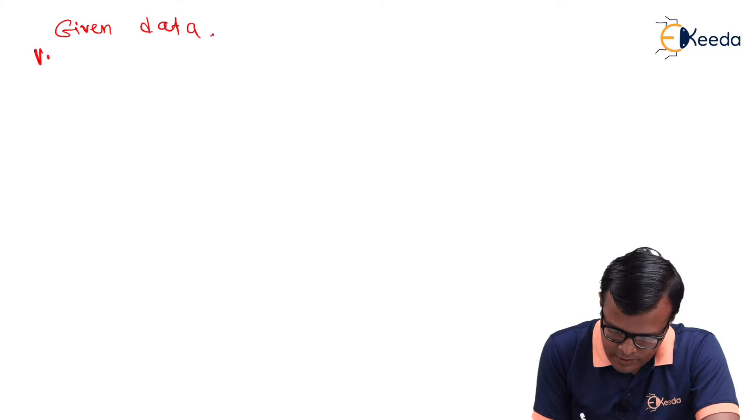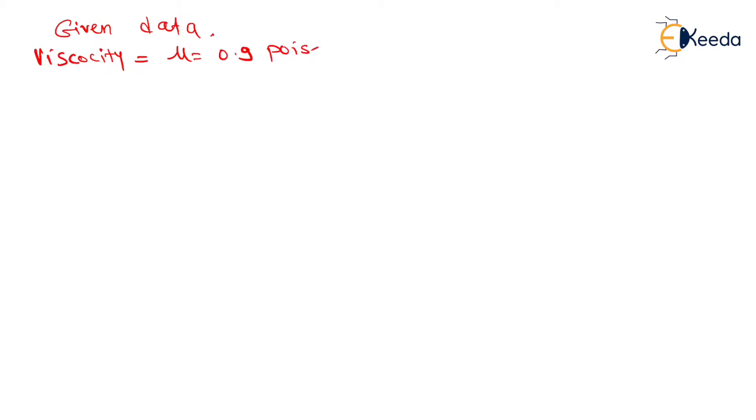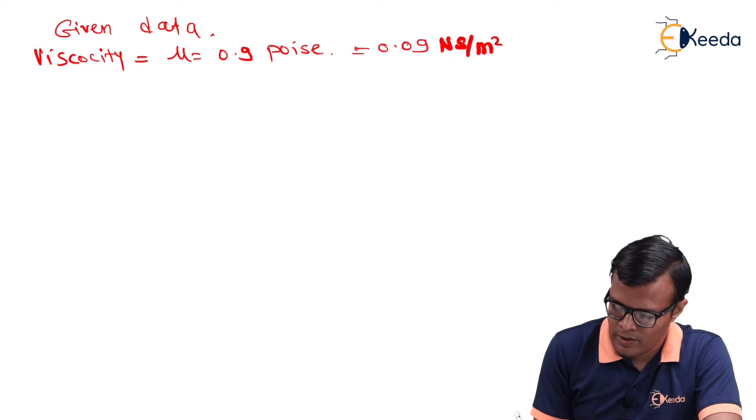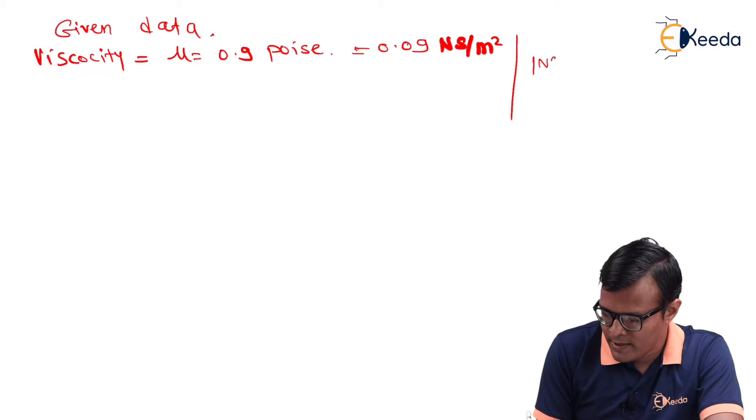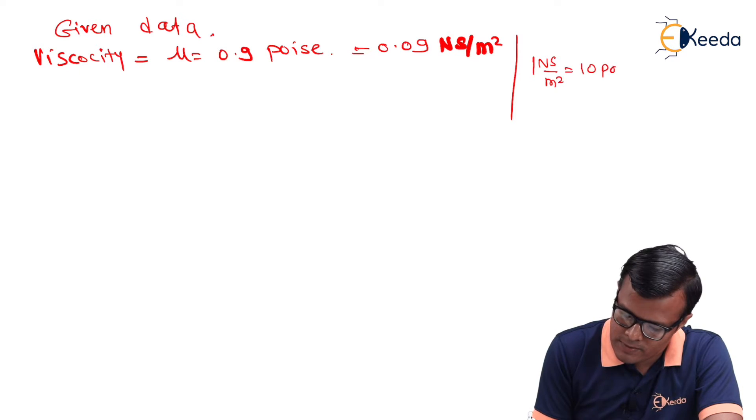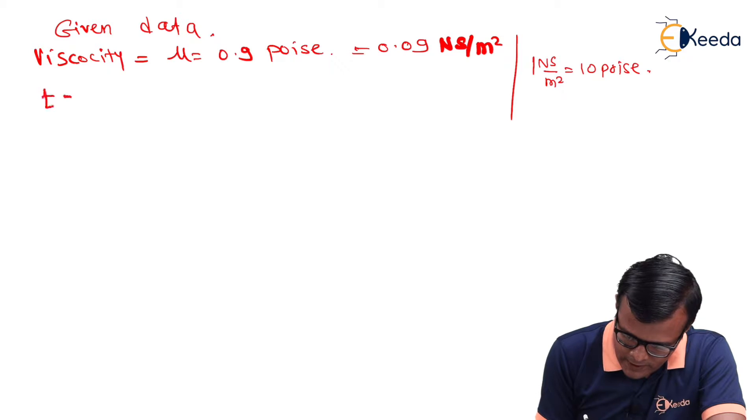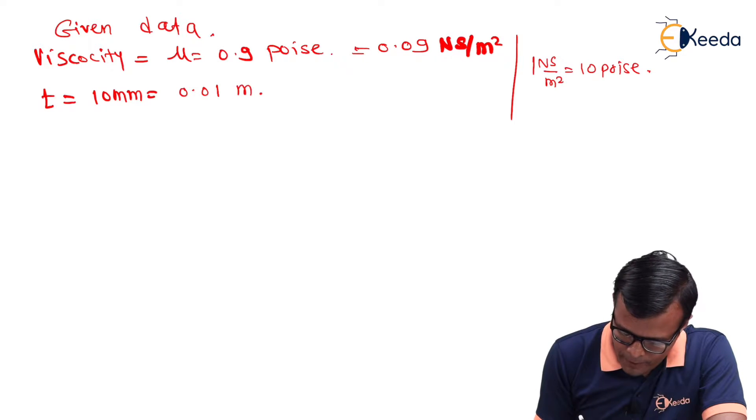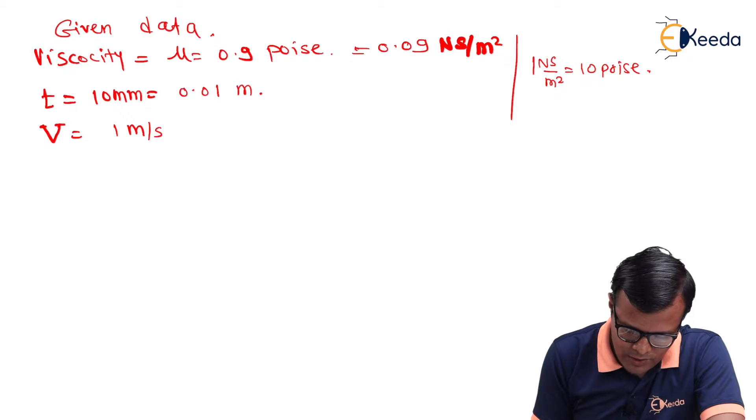Let us note down the given data. Viscosity is given as μ = 0.9 poise = 0.09 N·s/m². The basic relation is 1 N·s/m² = 10 poise. Thickness T is 10 mm, so 0.01 meter. Upper plate velocity V is 1 m/s. No need to change the velocity units.